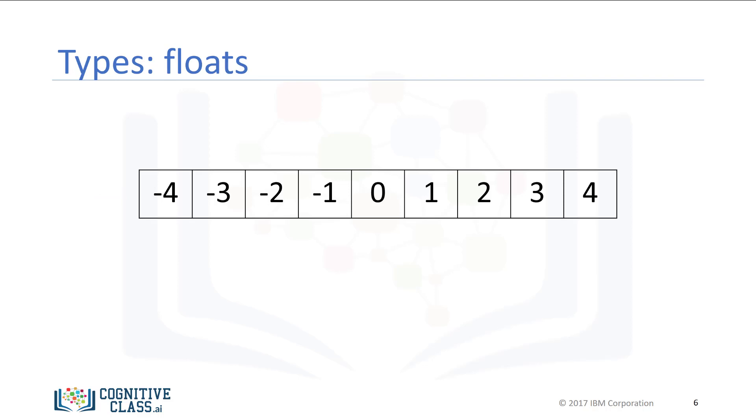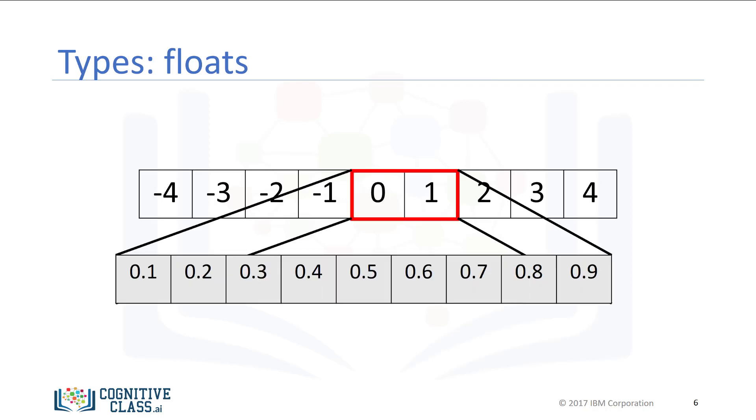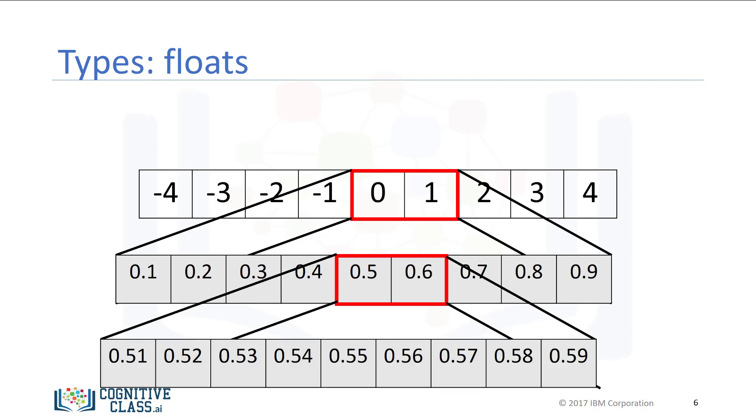Floats are real numbers. They include the integers but also numbers in between the integers. Consider the numbers between 0 and 1. We can select numbers in between them. These numbers are floats. Similarly, consider the numbers between 0.5 and 0.6. We can select numbers in between them. These are floats as well.